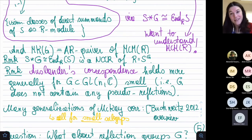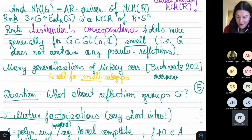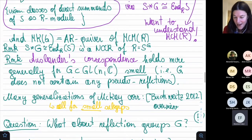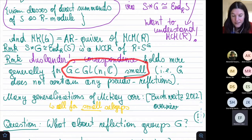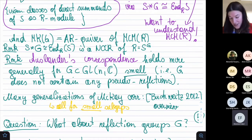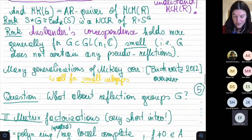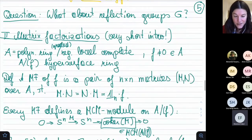This is the status as of 2014. We were interested in what happens when G is not small — in particular the opposite case, when G is generated by reflections. Before saying more about this, I want to quickly introduce matrix factorizations, since the talk is named after them and we haven't heard anything about them yet.